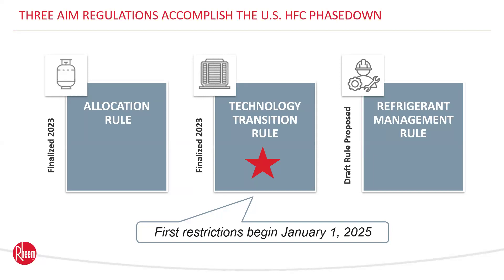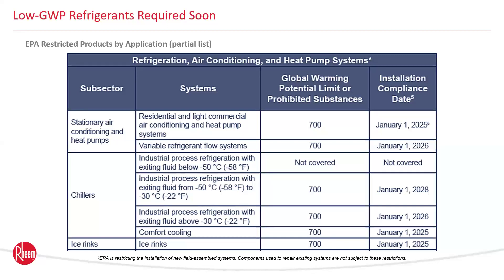Our main focus is the second leg of the stool: the transition to substitutes through GWP limits for specific applications. The EPA technology transitions rule is now final, and starting as soon as January 1st of next year, GWP restrictions will take effect in new refrigeration, air conditioning, and heat pump equipment. For stationary air conditioning, heat pumps, and chillers for comfort cooling, the prohibition on substances higher than 700 GWP is as early as 2025.